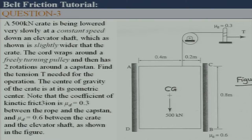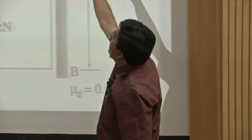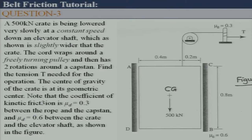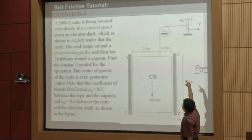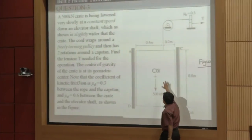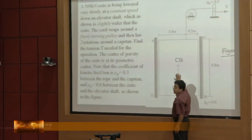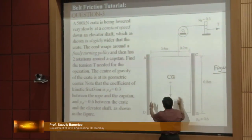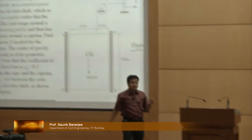The next problem combines point friction and belt friction. A crate is being lowered — there is a pulley that is free to rotate, and the rope goes to a capstan. The unknown we need to find is the tension in that cable. This is a combined problem using what was learned in the morning session.